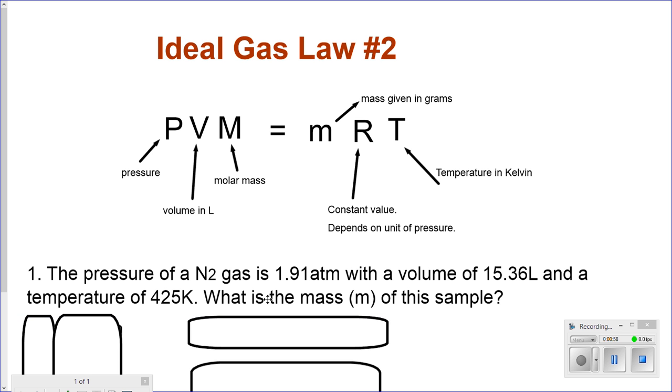The pressure of N2, that's nitrogen gas, is 1.91 atm with a volume of 15.36 liters and a temperature of 425 Kelvin. What is the mass, this small m in grams, of the substance?